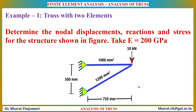This example is for a structure with two elements. We will try to determine the displacements at the nodes, the reactions, as well as the stress in each element. The cross-sectional area of each element is given in the problem. A load of 50 kN is applied at a particular point, and a Young's modulus of 200 GPa is given for the entire structure. Let us now analyze using the finite element method.